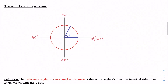We want to know what happens beyond this, because realistically, angles that we deal with in real life are not always acute angles. So we know that the plane is in four quadrants — quadrant 1, quadrant 2, quadrant 3, and quadrant 4 — and we use Roman numerals to denote them.